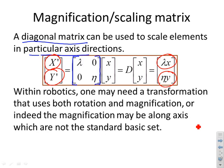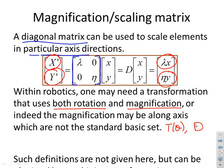Within robotics you might need a transformation that uses both rotation and magnification. Or the magnification might be along an axis which is not the standard basis set. That's beyond the purpose of this video but hopefully you can see that in principle a combination of T of theta rotation matrices and D scaling matrices can be used to obtain the overall transformation you want.